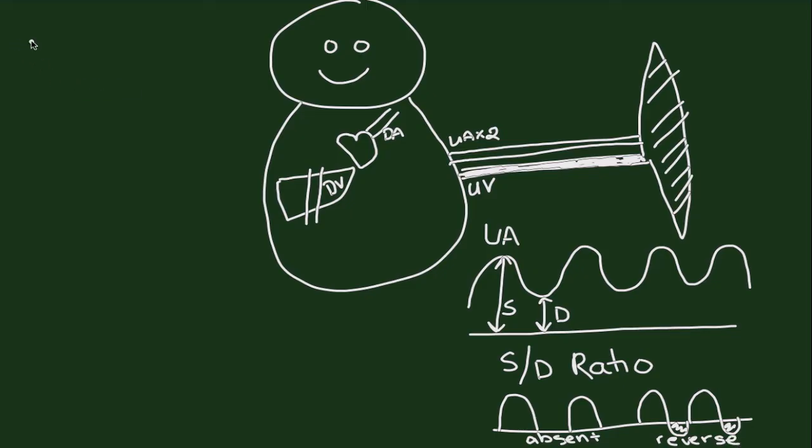The next vessel that we can interrogate to look at signs for utero-placental insufficiency is actually the middle cerebral artery. You can see the blood that's coming out of the fetal heart across the ductus as well as from the left ventricle. The first place that it goes is up towards the intracranial circulation. Typically, in normal intracranial circulation, you have a much higher flow during systole and a much lower flow during diastole when you compare umbilical artery Doppler studies.